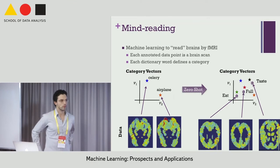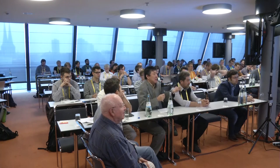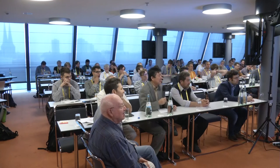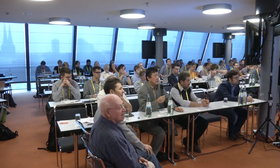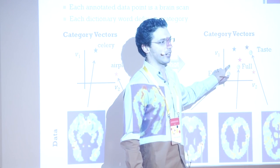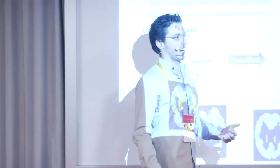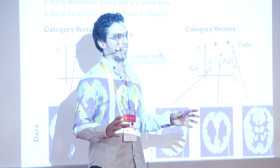Regarding the question about how the system knows a category is new: it doesn't need to know. You can get category vectors for any word via word2vec, so the old categories and new categories all live in the same space. The simplest algorithm does nearest-neighbor matching treating the union of old and new categories together. What is transferred is both the background mapping — learned from the regression on known categories — and the category vector of the new category, which can be obtained basically for free from word2vec.